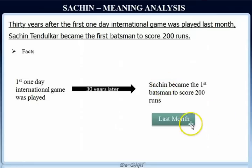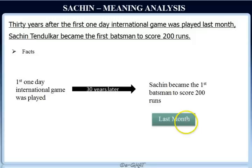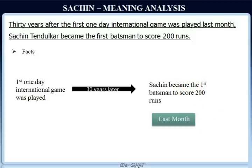So logically, it would make sense to say that 30 years after the first international game was played, Sachin actually became the first batsman to score 200 runs last month. So 'last month' is basically providing us with more precise timing of when Sachin became the first batsman to score 200 runs. Logically we can infer the meaning, but we know that there is something wrong with the way this sentence is written.